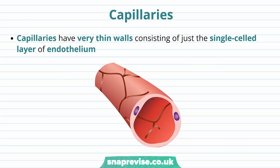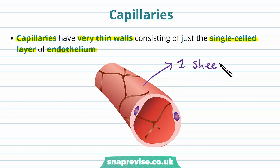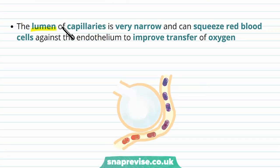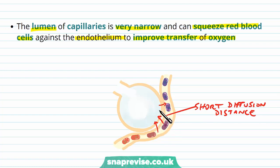Eventually blood reaches the smallest vessels in the body — capillaries — which is where exchange happens in all of the tissues. They have very thin walls: just a single layer of endothelium, with no outer walls, muscle or elastic tissue. This thinness allows oxygen to move out to cells, CO2 to leave at the alveoli, and oxygen to come in at the alveoli. The lumen is very narrow, squeezing red blood cells against the endothelium to improve oxygen transfer, minimising diffusion distance so gas exchange and nutrient exchange are at maximum efficiency.